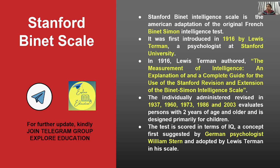The first version was in 1916. The subsequent revised editions came in 1937, 1960, 1973, 1986, and 2003. So in total there are five revised editions, with the latest version being the 5th edition published in 2003.